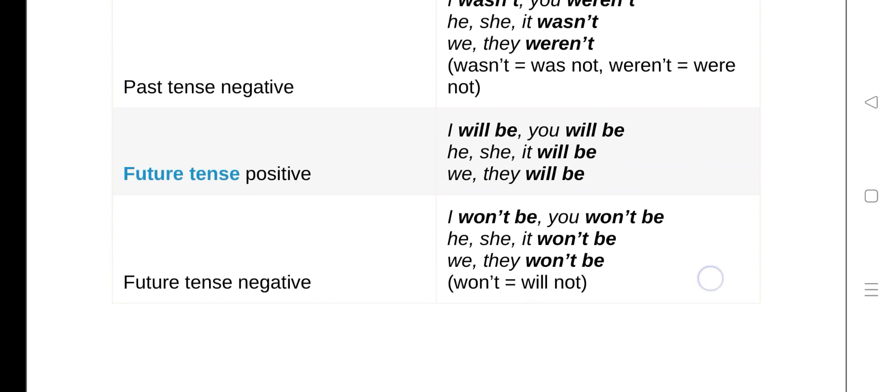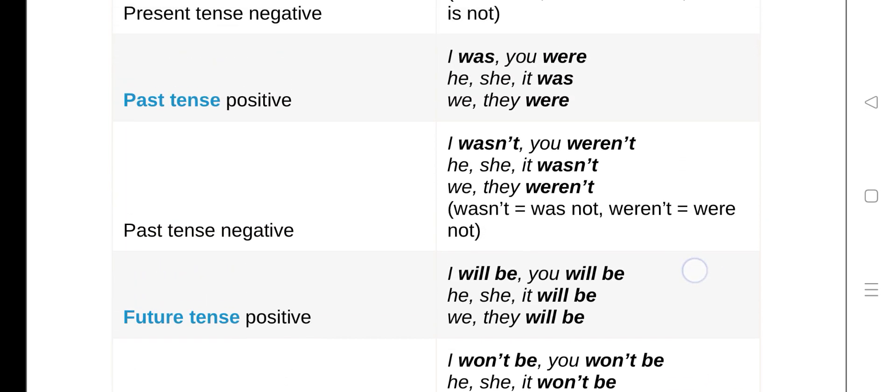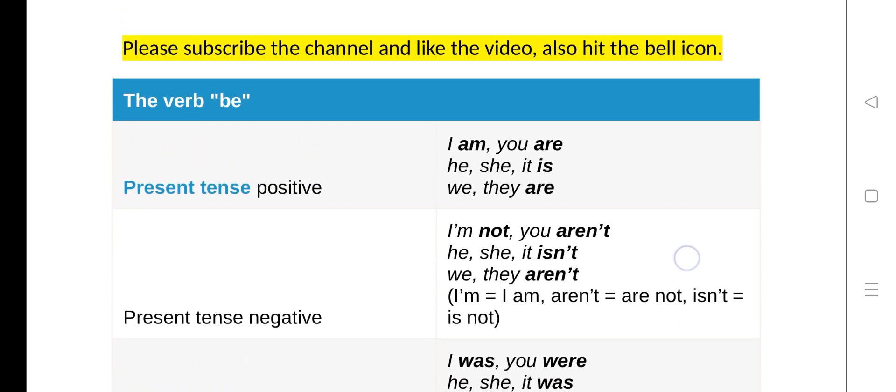So in this lecture, you have to just remember what verb 'be' is. Verb 'be' is actually the state of being—in which state it is present now.